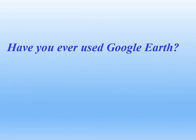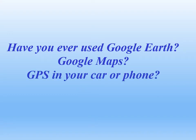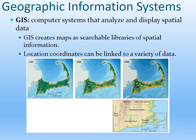Have you ever used Google Earth, Google Maps, or a GPS in your car or on your phone? GPS devices actually use satellites as well. If you've used any of these technologies, then you have used what's called geographic information systems. GIS has revolutionized the field of geography, making creating maps and analyzing geographic data much more robust and easier. There's also a GIS program at Pierce College where you can earn an associate's degree or certificate and go into the workforce or add a specialty to your major to analyze spatial data.